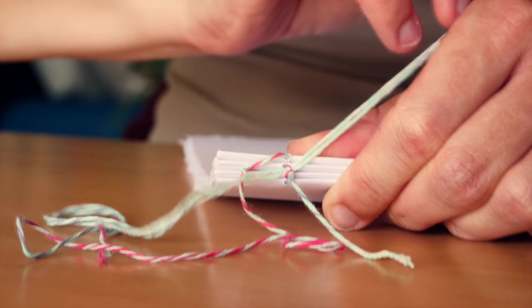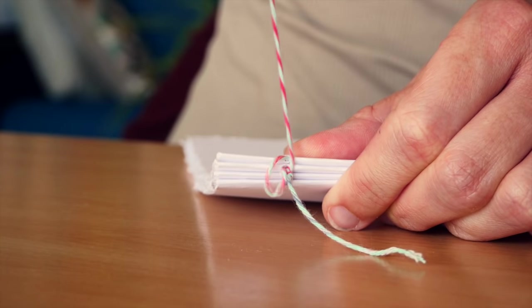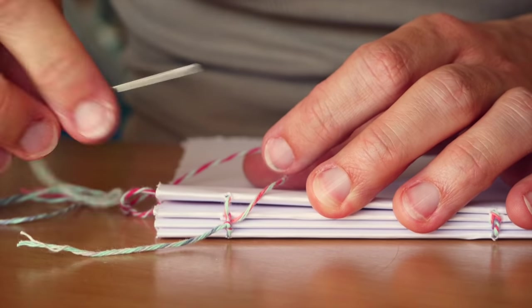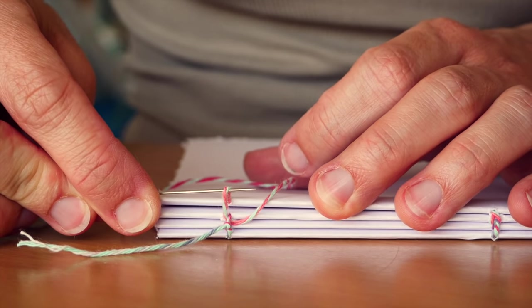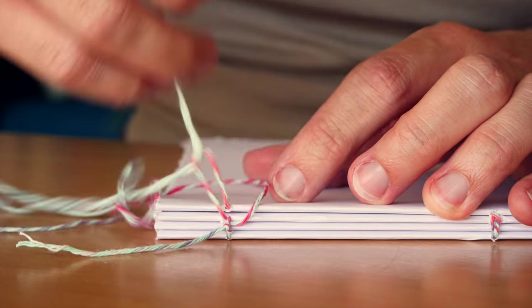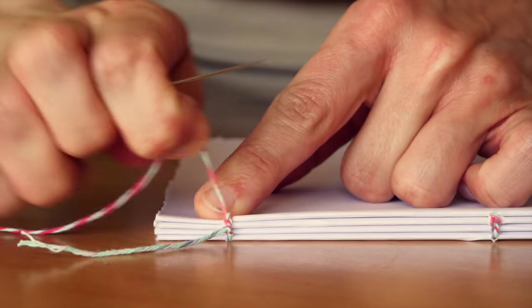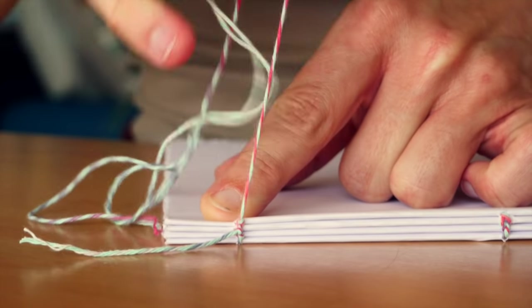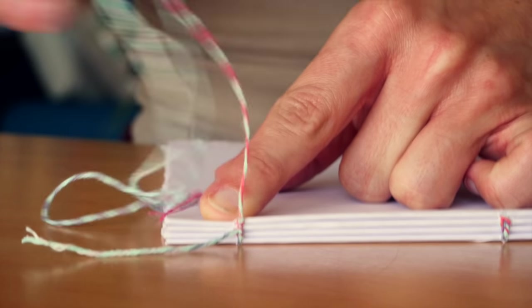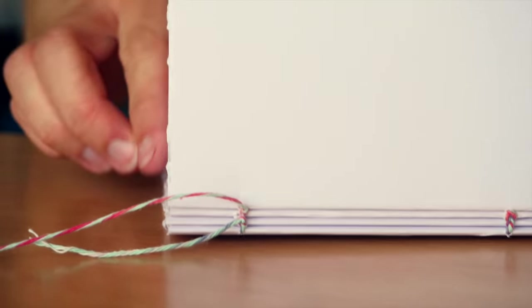Insert the needle underneath the previous loop. Then put your needle in the last stitch, this one you just made right now, in order to make a knot. Press on the sketchbook and tighten your knot, and here it is, your binding is done.